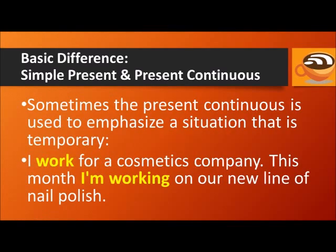Sometimes the present continuous is used to emphasize a situation that is temporary. For example: I work for a cosmetics company. This month I'm working on our new line of nail polish. The nail polish project is a temporary situation, and my working for a cosmetics company is more permanent — it's true in general.